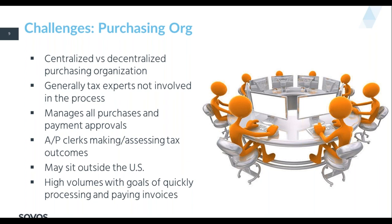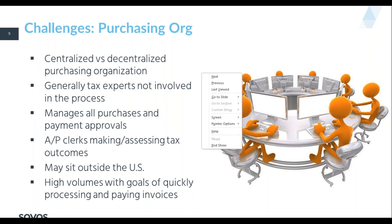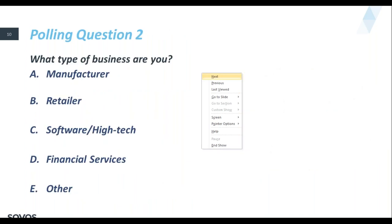Purchasing organizations' goal is to make sure you're getting your purchases in, paying invoices quickly and on time, getting discounts if available — at least not paying late. Tax is not often a driver of that for the purchasing organization. Tax may have little to no line of sight into this arm that's constantly engaging in transactions and could, for the sake of expediency, be making tax mistakes.